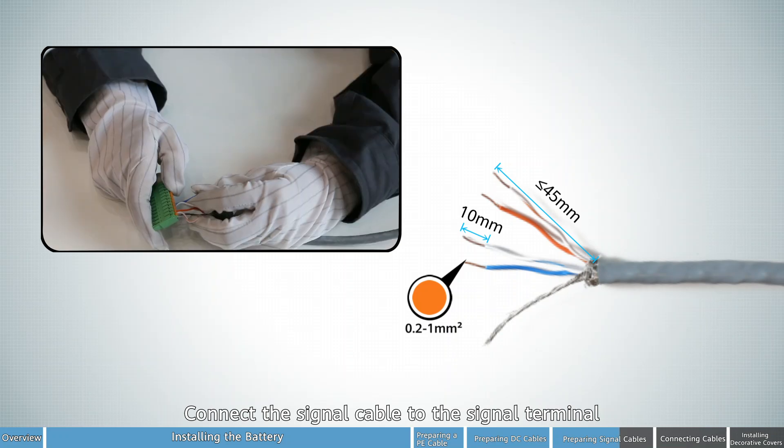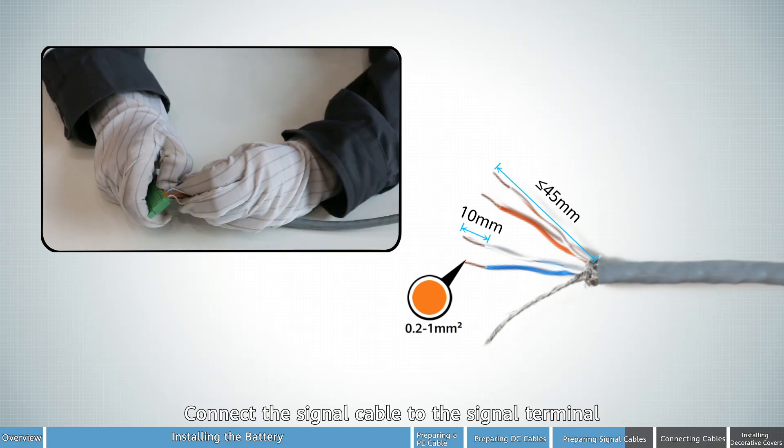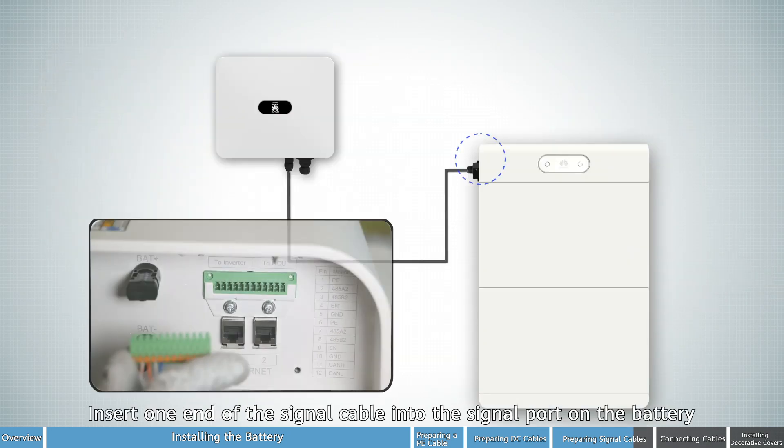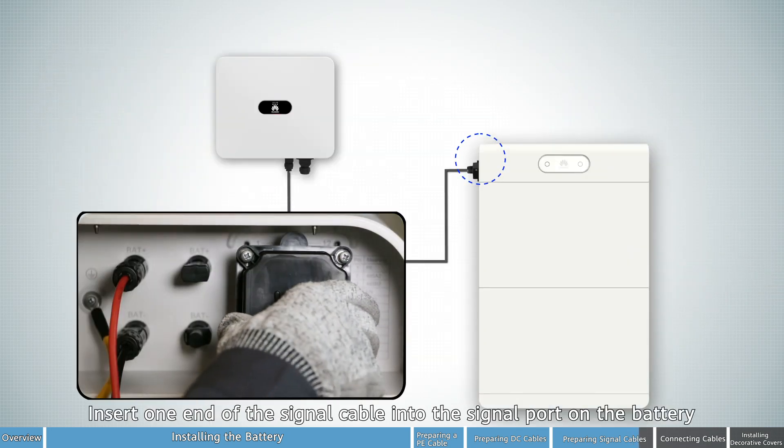Connect the signal cable to the signal terminal. Insert one end of the signal cable into the signal port and the battery.